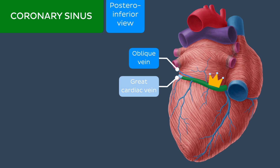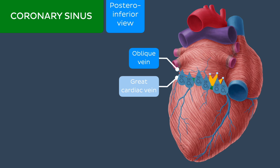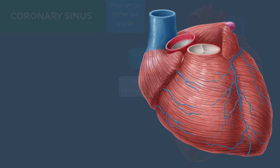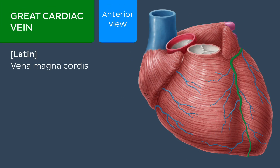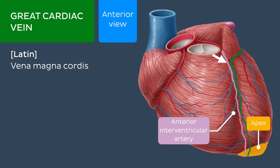However, it also receives a number of other tributaries, all of which we will discuss in a moment. The great cardiac vein is the larger of the two major veins that form the coronary sinus. It originates at the apex of the heart and runs through the anterior interventricular sulcus next to the anterior interventricular artery.